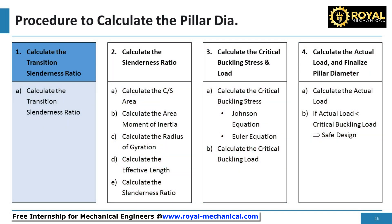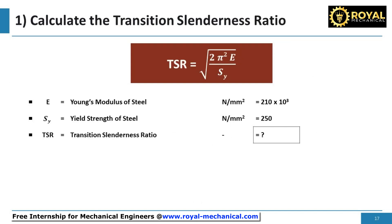First, let's calculate the transition slenderness ratio. The formula used is: TSR is equal to the square root of 2 times pi squared times E divided by SY, where E is the Young's modulus of steel, which is 210,000 newtons per square millimeter, and SY is the yield strength of steel, which is 250 newtons per square millimeter. By substituting the values, the transition slenderness ratio of the pillar is 128.8.